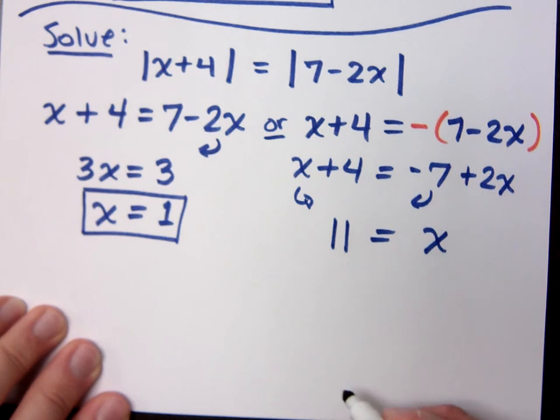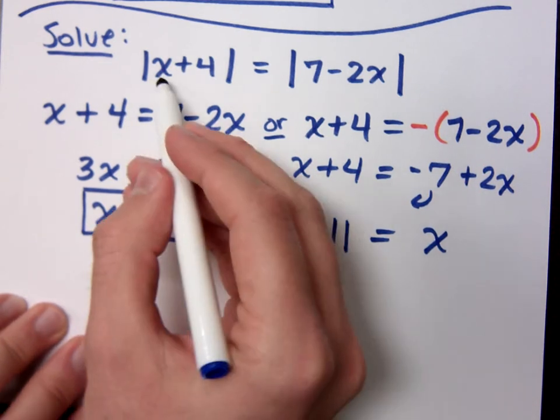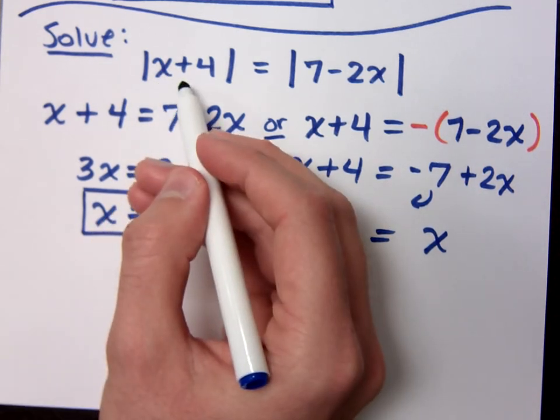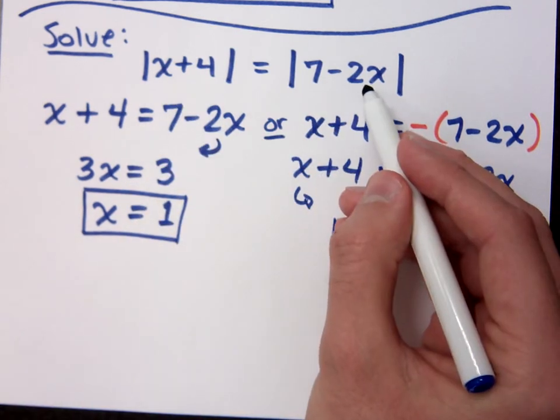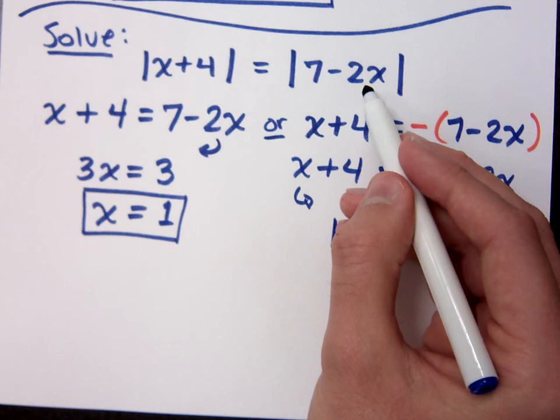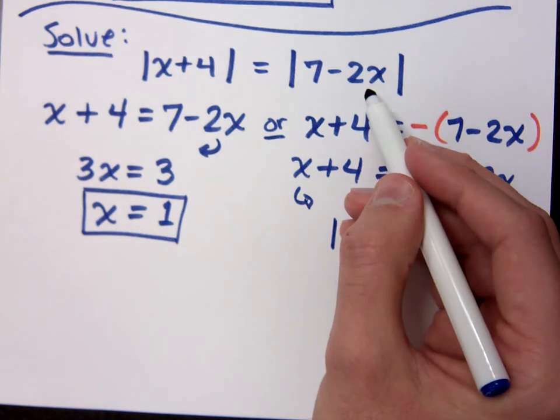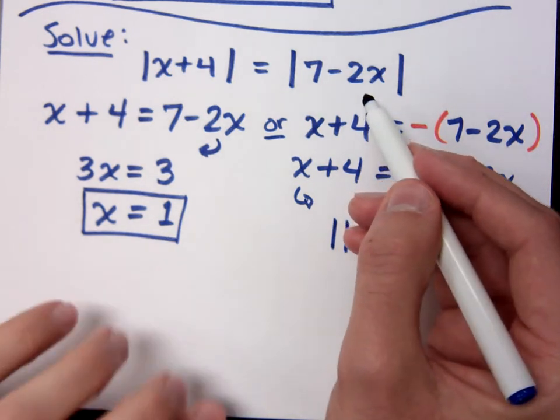So, we move these terms on the appropriate side. If you plug in 11, what's 11 plus 4? 15. 7 minus 22 is what? Negative 15. So, the absolute value of 15 equals the absolute value of negative 15, right? Cool.